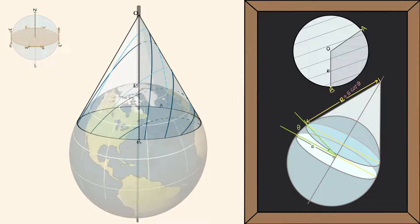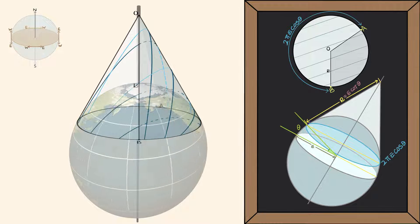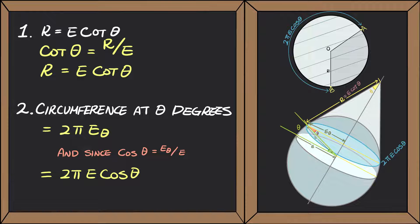And the circumference of the cone will be 2 pi E cosine theta. If you want the math, here it is. Stop the video if you want to examine it.